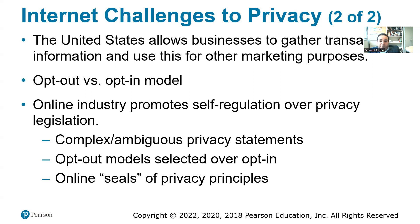The online industry promotes self-regulation over privacy legislation, but often provides ambiguous privacy statements that require a law degree to understand. The majority of companies use opt-out models — by default they collect data about you until you change that setting. For example, browsers by default allow cookies and tracking until you opt out yourself. Some companies also use online seals like eTrustE to show they adhere to privacy principles.